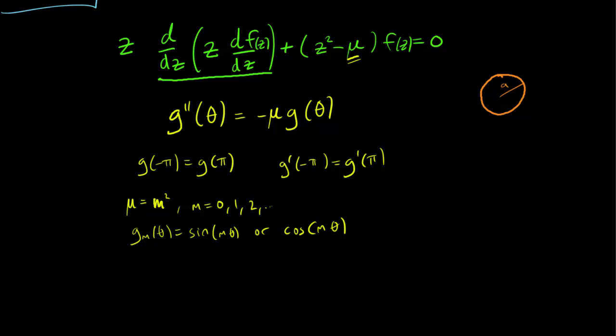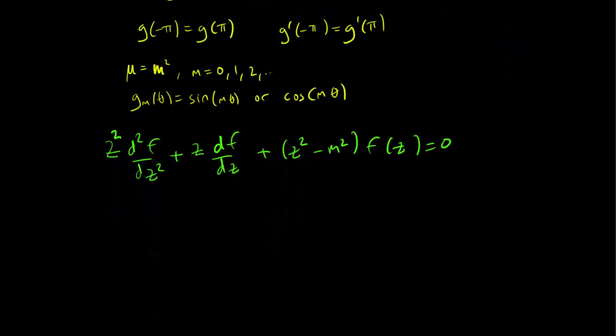So we have z second derivative of f plus first derivative of f, plus z-squared and we know that mu is m-squared, so z-squared minus m-squared times f of z equals zero. And this is known as the Bessel equation.